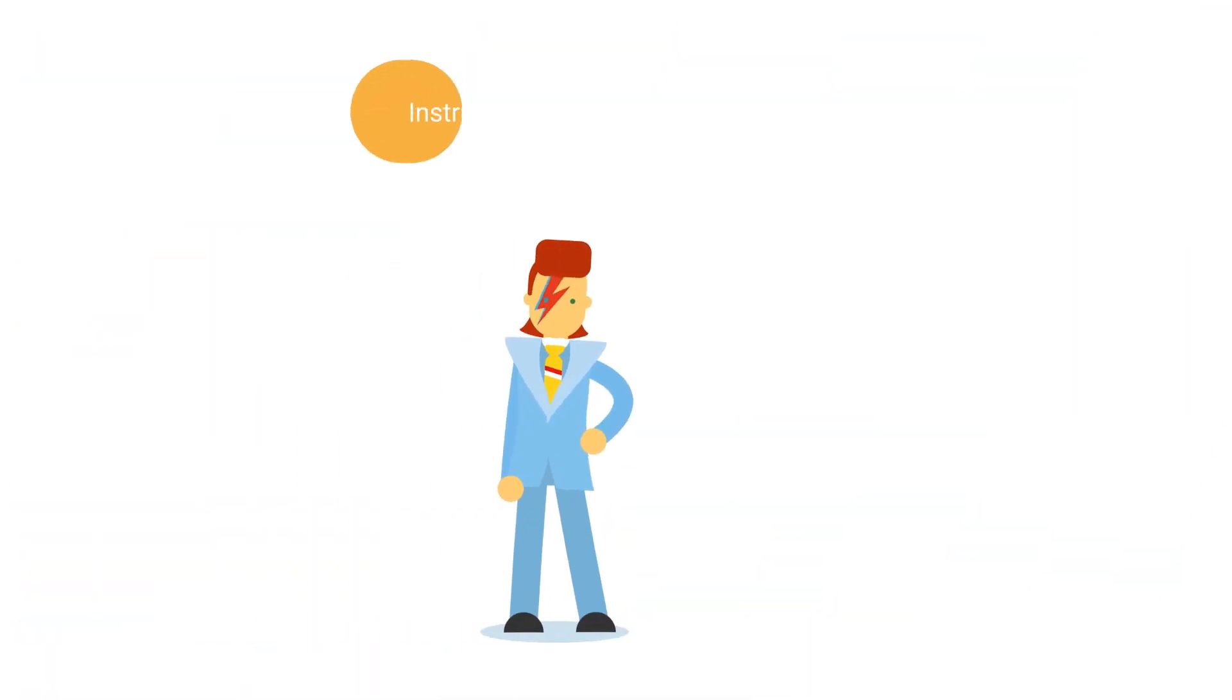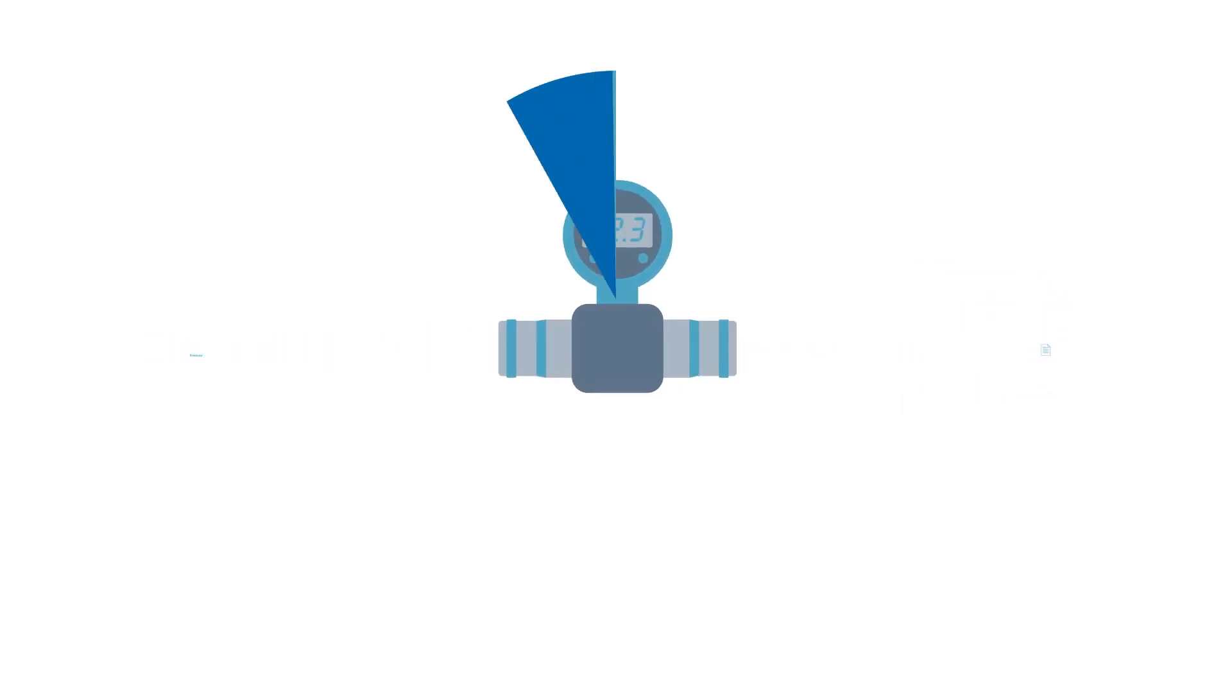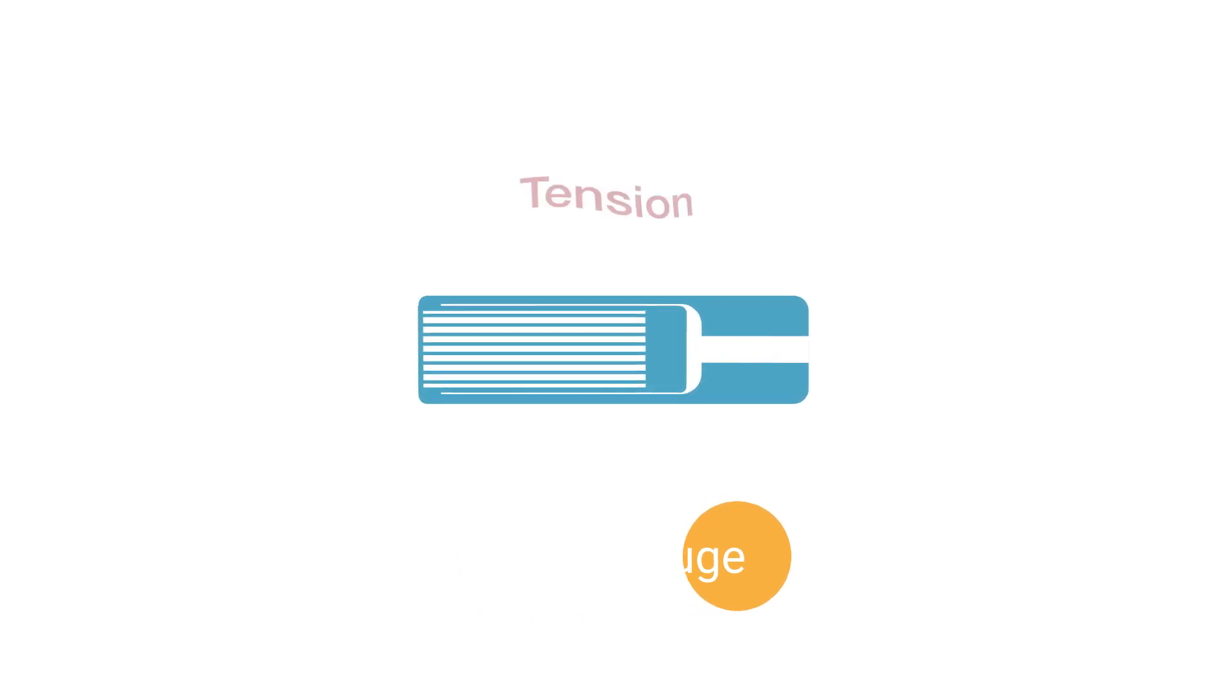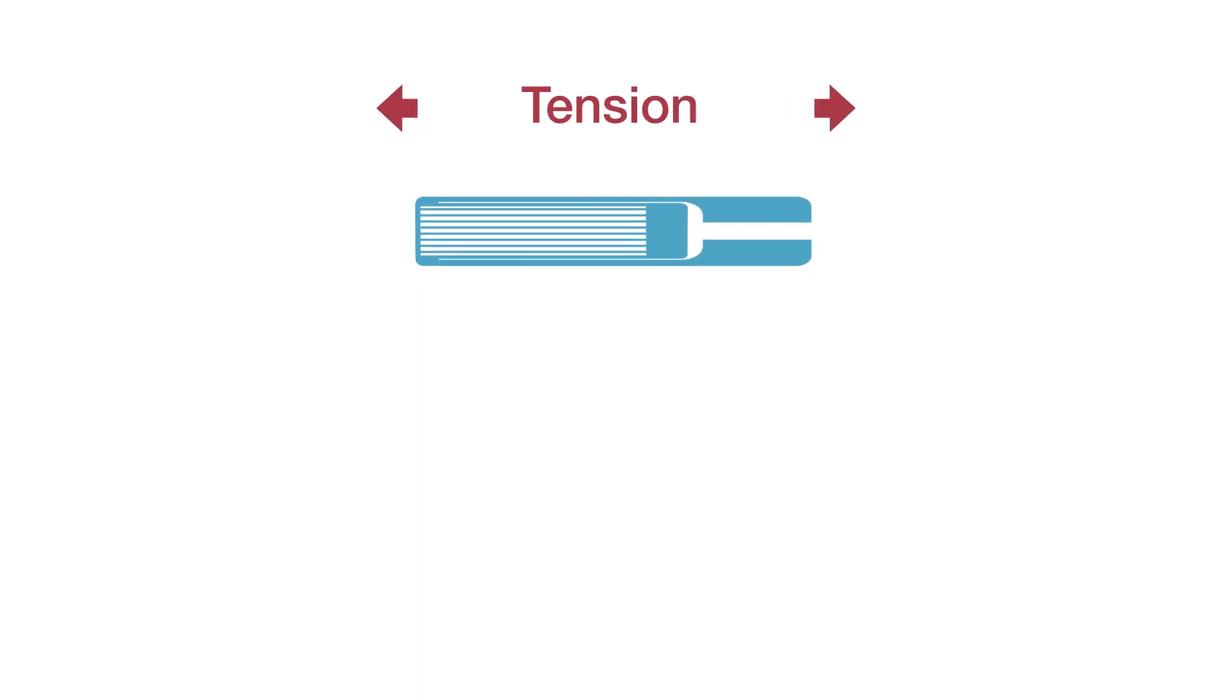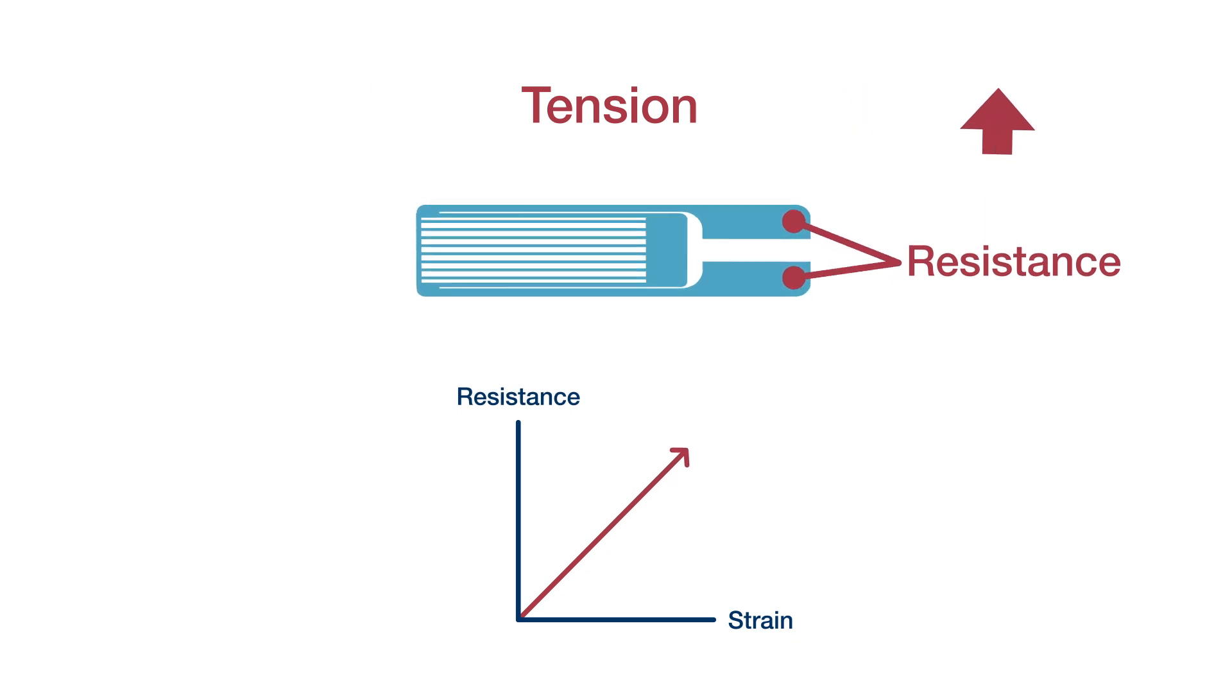With those two formulas in mind, we can talk about the instruments we use to measure pressure. Pressure transducers are nifty devices that convert pressure into an analog electrical signal. Many pressure transducers use a type of resistor called a strain gauge. Under tension, a strain gauge stretches out, narrows, and increases its resistance.